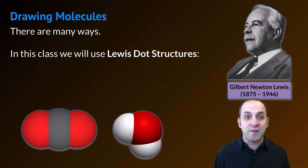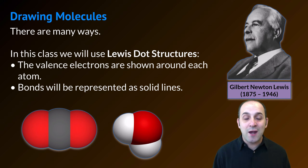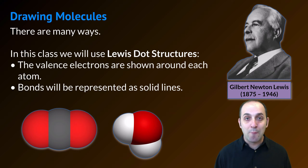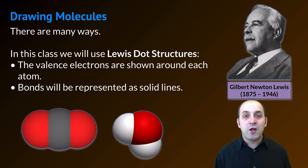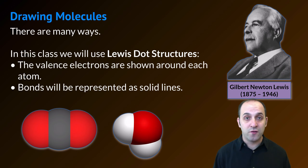The way this works is pretty simple. The valence electrons are shown around each atom and bonds are always going to be represented as solid lines. Remember that a covalent bond, or one line, represents the sharing of two valence electrons.